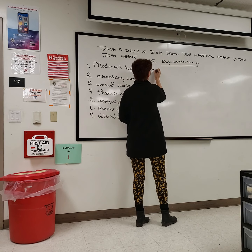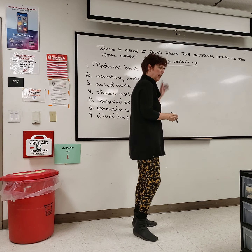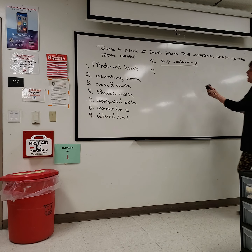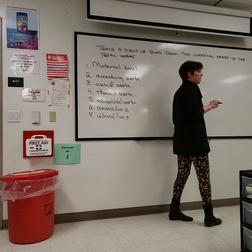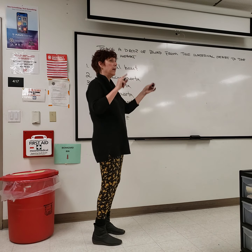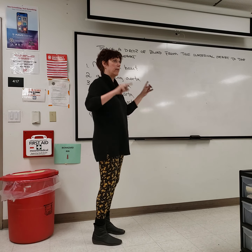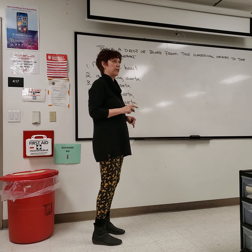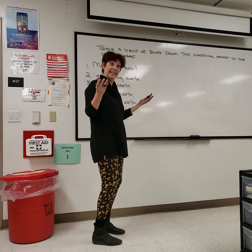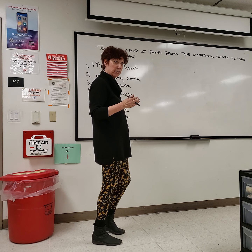We're doing fetal circulation. So internal iliac, and then it's going to the placenta. How do we get blood to the placenta? Not the ductus arteries — that's the baby. We have to get to the placenta first. Where's the placenta? What organ is the placenta in? The uterine artery. The uterine artery is a branch of the internal iliac.